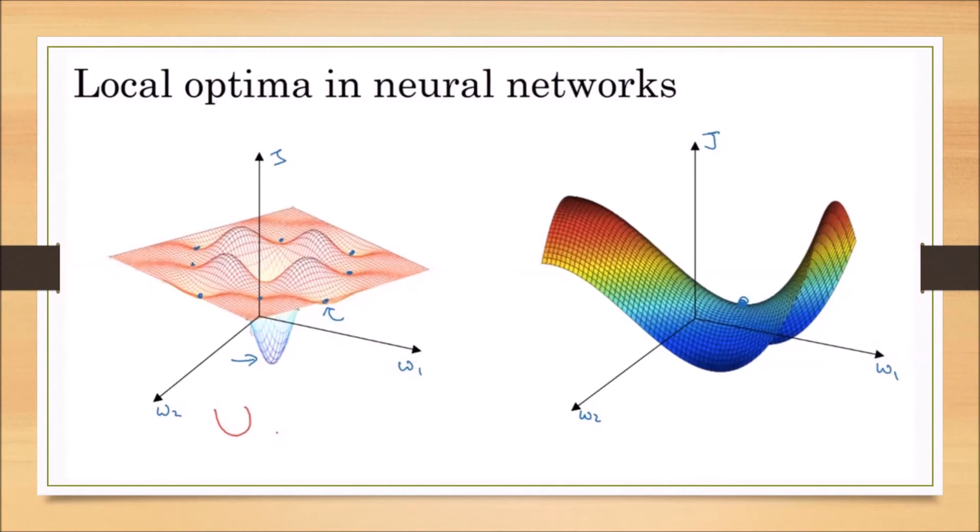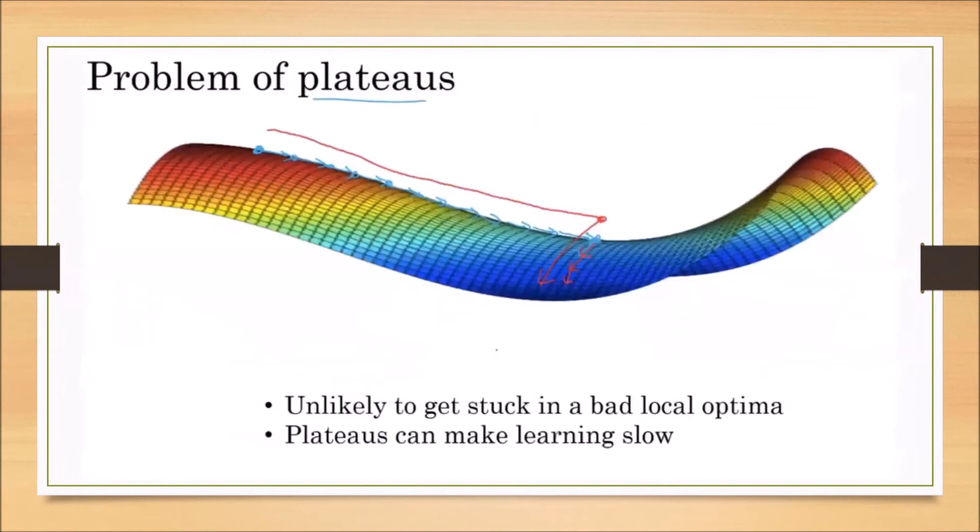However, when using more parameters in neural networks, there may be flat regions. This will take a huge amount of time or many iterations to find the minimum value. That's why we prefer RMS